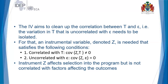The instrumental variable Z affects selection into the program but is not itself correlated with the factors affecting the outcomes. It is only correlated with the probability of participating or not participating in the program, but does not directly affect the outcomes.